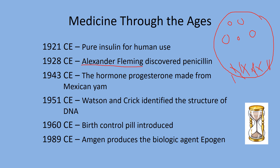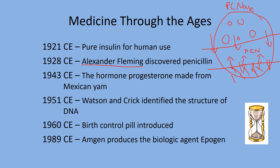Alexander Fleming discovered penicillin accidentally. He was trying to grow bacteria but his plate was contaminated with mold, and between the mold and the bacteria there was no bacterial growth. He found that the mold was producing and releasing penicillin into the environment, preventing bacteria from growing — essentially chemical warfare in the microbial world. Today, however, we have the emergence of superbugs: bacteria launched a counter-attack using penicillinase, an enzyme that breaks down penicillin.